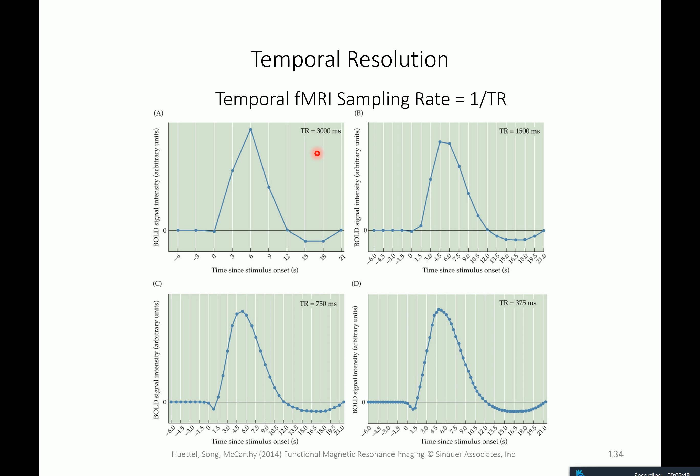Why this coupling exists — that's for January. The basic sampling rate is given in terms of the TR, which is a parameter you set when you do your experiment. Keep in mind that even if you sample the BOLD response at a high sampling rate, it still peaks only after about four seconds.